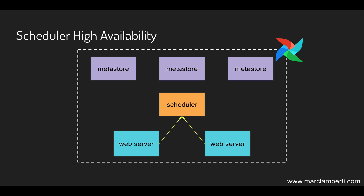Currently your architecture in production may look like this. Basically you have multiple web servers running at the same time with a load balancer in front of them. Each time you want to access the Airflow UI, the request is sent to one of the web server instances by the load balancer. By doing this, if one web server goes down you are still able to access the Airflow UI. This is pretty easy to set up.